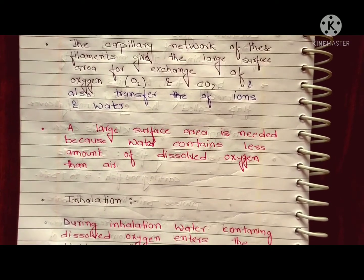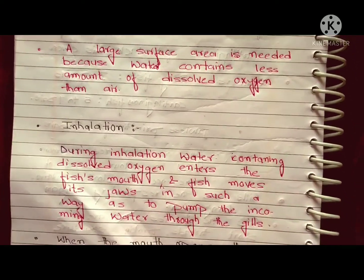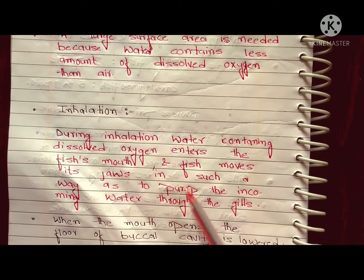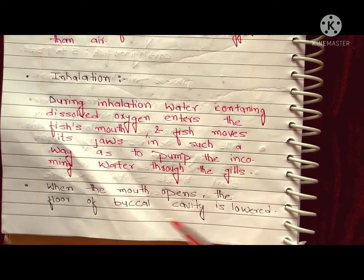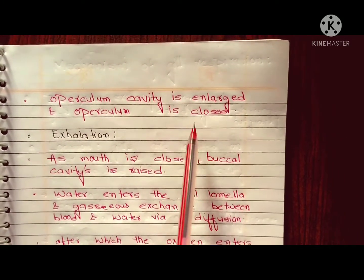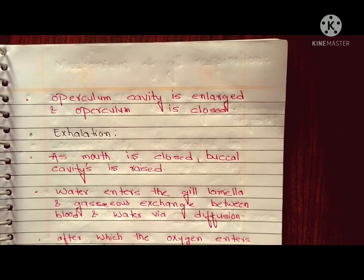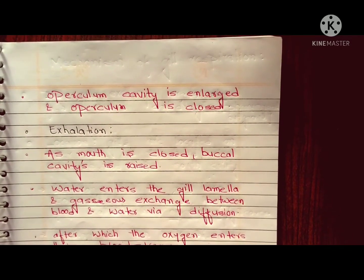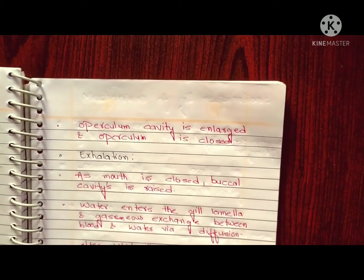Let's see how bony fish respire through the gills. During inhalation, water containing dissolved oxygen enters through the mouth. The fish moves in such a way as to pump incoming water through the gills. When the mouth opens, the floor of the buccal cavity is lowered, the opercular cavity is enlarged, and the operculum is closed. Water then passes through the pharynx and buccal cavity into the gills.